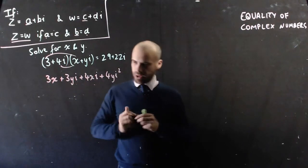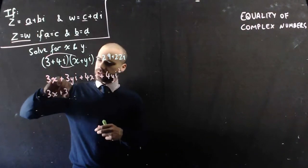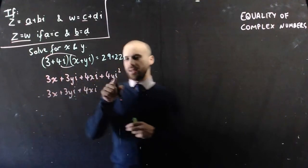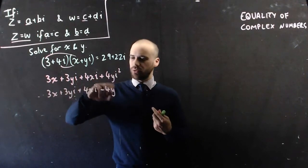And now, I'll do one more line here. So 3x + 3yi + 4xi, and that i squared is negative 1. So negative 1 times 4y is negative 4y.